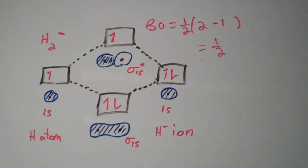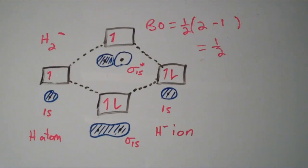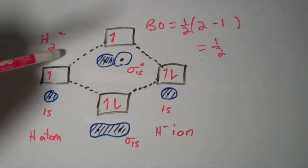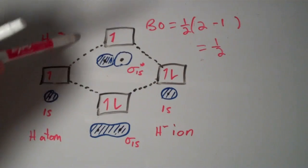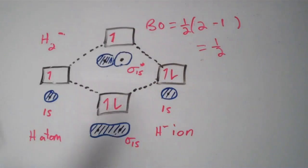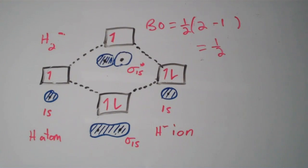It should be apparent that molecular orbital theory is more useful than valence bond theory, because under valence bond theory there wouldn't really be any way to justify the existence of the H2 minus ion — there would be no way to construct that. Molecular orbital theory is more refined.